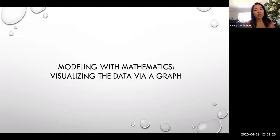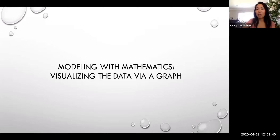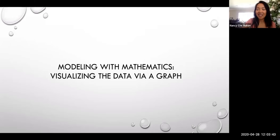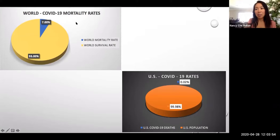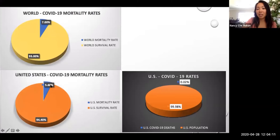I'm extremely visual, and one of the reasons why I love mathematics is that you can model it in different ways — through numbers like I just did, or through a visualization of a graph. I chose to use a pie graph to represent percentages because I think that's the best way to see and understand it. The left-hand corner of the screen here indicates the mortality rate — the rate that people have died from coronavirus out of those who have been infected by it. The rate right now indicates 7% of people who have been infected have passed away in the world, and 5.6% in the United States.